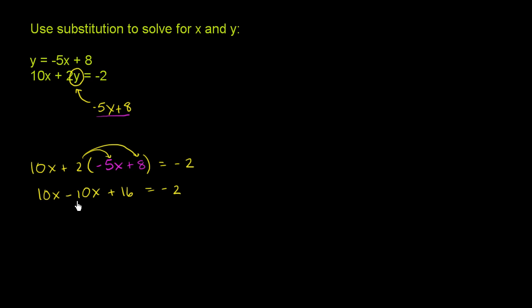So plus 16 is equal to negative 2. Now we have 10x minus 10x. Those guys cancel out. 10x minus 10x is equal to 0. So these guys cancel out.